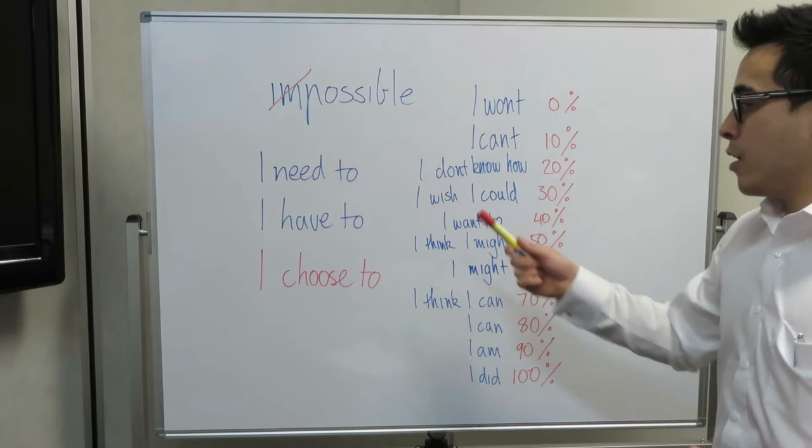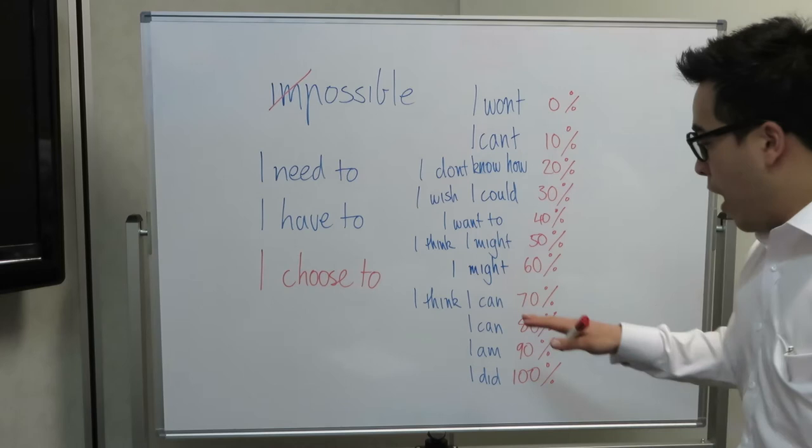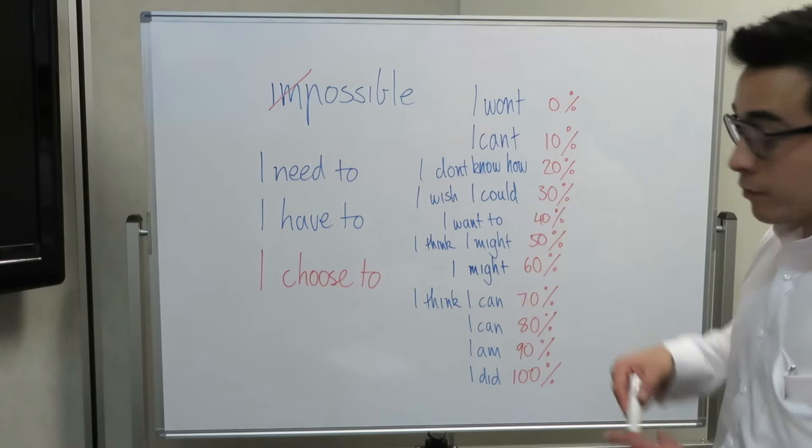I can't, 10%. I don't know how, 20%. I wish I could, 30%. I want to, 40%. We're warming up here. This is better. I think I might, 50%. I might, 60%. I think I can, 70%. As you can see, we're getting more positive. I can, 80%. I am, and I did, 100%.